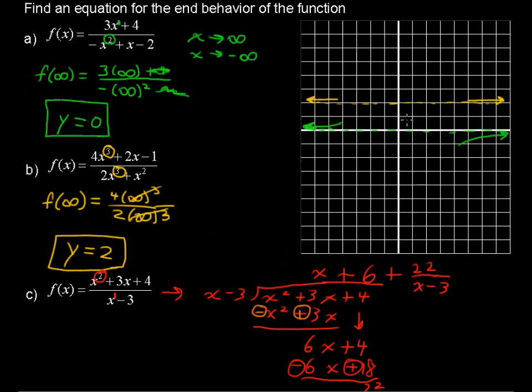When x is very small, somewhere in the middle of this graph, this fraction, this rational expression, does matter. But as x grows very big, this is 22 divided by a huge number. So this tends to 0. A lot of times in math it's written like this, goes to 0. So now we have y equals x plus 6. That is your function. That's your equation that models the end behavior.